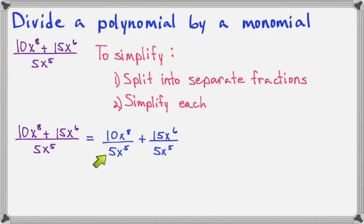And now, each of these fractions can be reduced. We know that 10 divided by 5 makes 2. x to the 8th over x to the 5th makes x to the 3rd. And for the second term, 15 divided by 5 makes 3. And x to the 6th divided by x to the 5th makes x. And so, this is our simplified result.